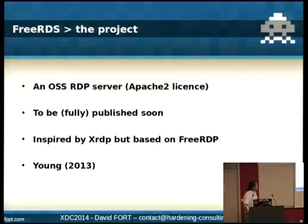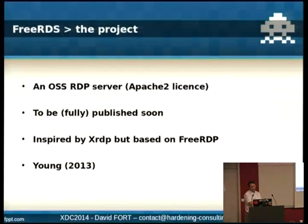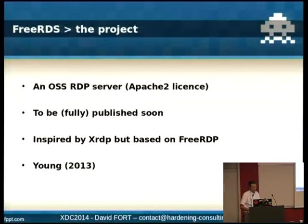So the FreeRDS project — it is released under the Apache 2 license. This will be published completely by the end of the year. We originally planned to publish around September but were a little late. FreeRDS took inspiration from XRDP, but this time we are totally based on FreeRDP, which is a free RDP implementation. We started this project about two years ago.